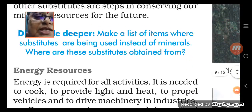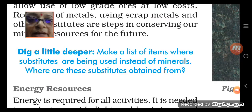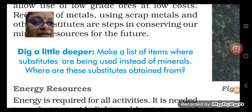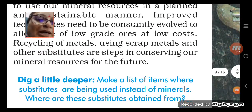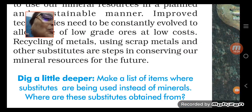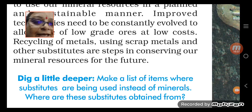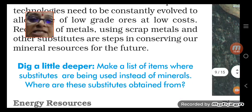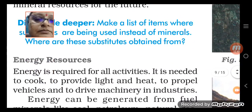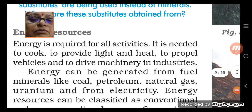When we dig a little deeper, we make a list of items where substitutes are being used instead of minerals. We try to understand where these substitutes come from. Energy resources are needed for all activities — everything requires energy. Now what we discuss here are energy resources, because energy is needed to cook food, for light and heat, for vehicles, machinery, and industries. All these things are possible through energy resources.